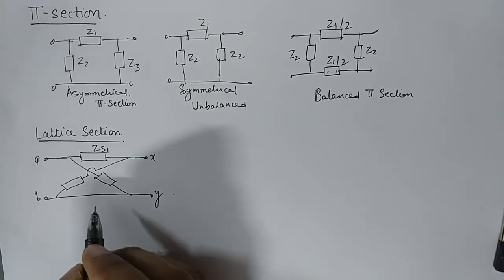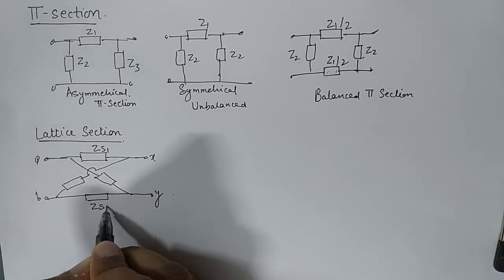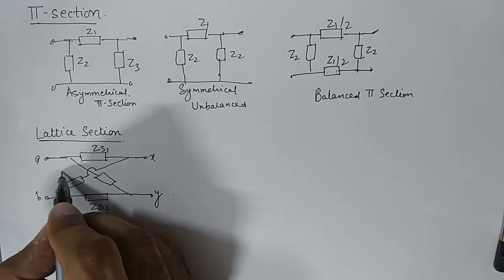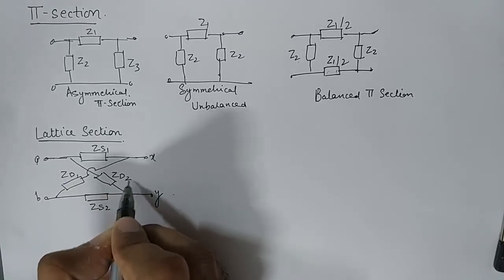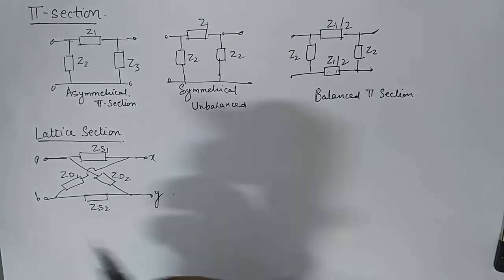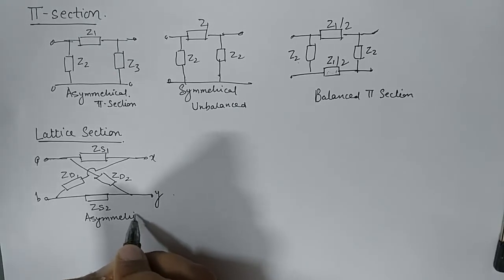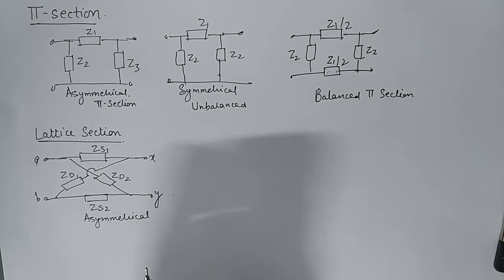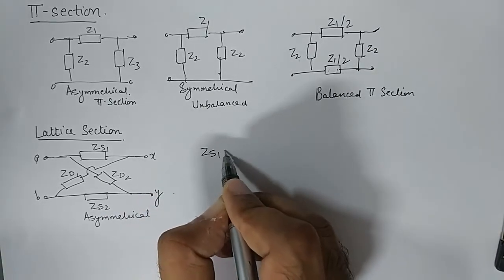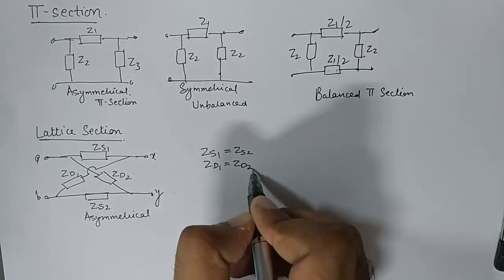I will try to make an asymmetrical balanced lattice network with an additional impedance here also. So if you wish to make this as a symmetrical section, this is asymmetrical, then we must make Zs1 equal to Zs2 and Zd1 equal to Zd2.